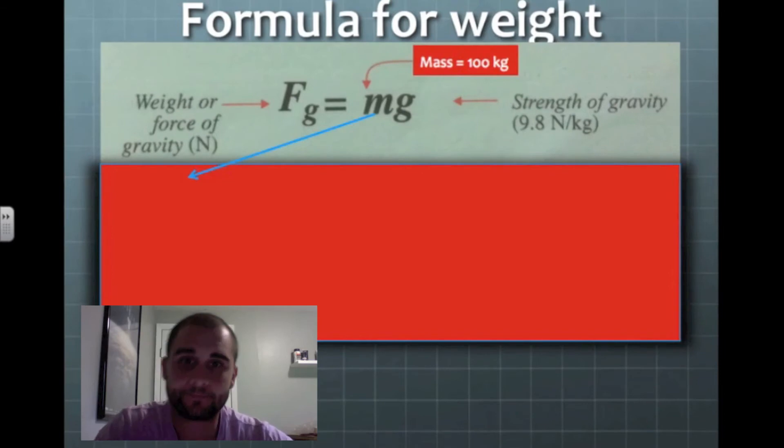This is our formula for weight. This is our weight over here. The force of gravity is our weight. This is mass. And this is gravity, which is 9.8.